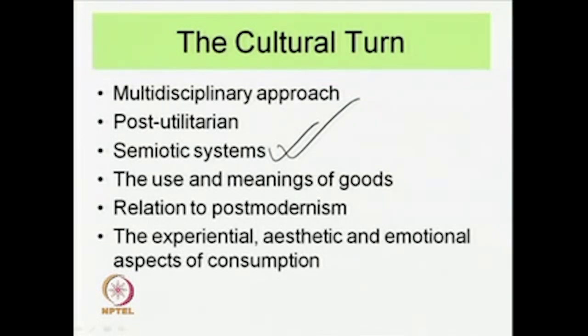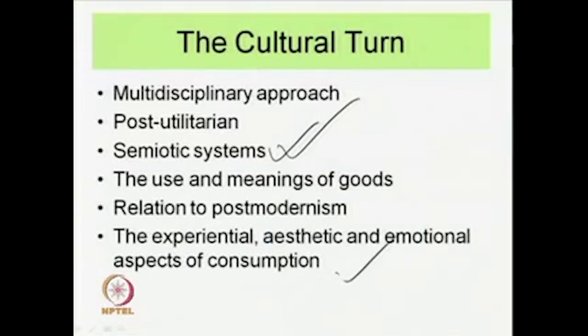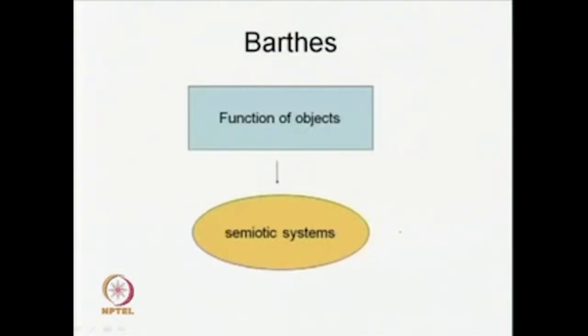Then we found there was a cultural turn, a multi-disciplinary approach that was post-utilitarian and focused on semiotic systems — on signs and signifying practices, images, symbols within consumption. This was seen as related to post-modernism, not analysis from a Marxist perspective with a clear onus on political economy, but more about the signifying practices, the experiential, aesthetic, and emotional aspects of consumption. Roland Barthes talks about the function of objects within consumption as related to semiotic systems.